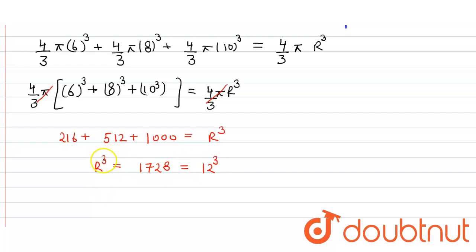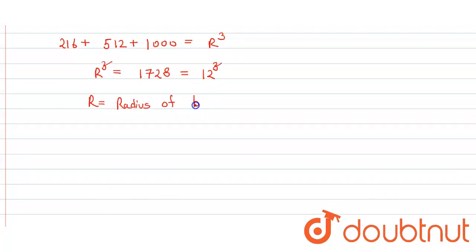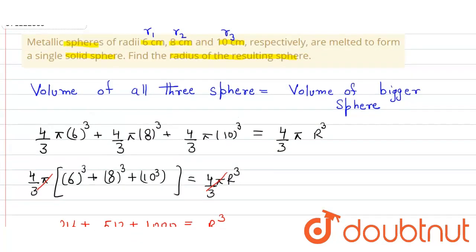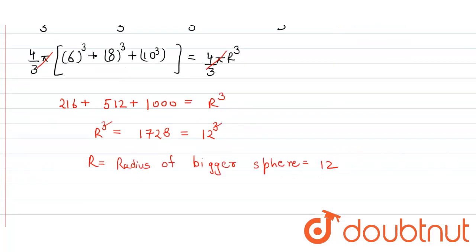So the cube root cancels and we get r, the radius of the bigger sphere, equal to 12 centimeters. So we get our answer in centimeters.